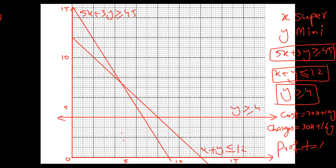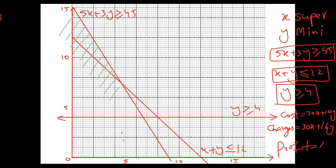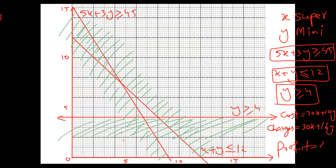Up till now I've finished drawing all three lines. Now let's draw the unwanted shading. For Y greater than or equal to four, bigger values are above the line, so I shade below the line as unwanted — using green. For X plus Y less than or equal to 12, smaller values are below, so I shade above the line. I've got a triangular feasible region.